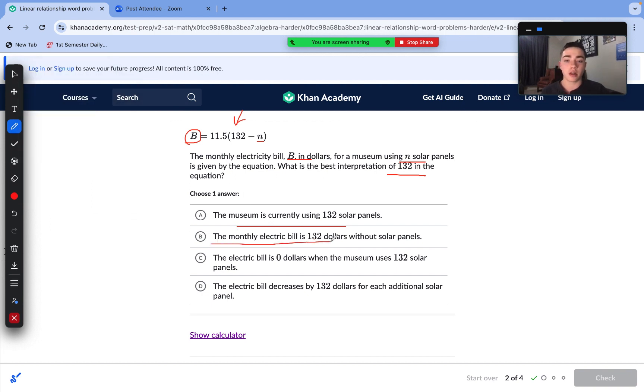Answer is B, the monthly electricity bill is 132 dollars without solar panels. So if we had zero solar panels and n would be equal to zero, then we'd have to do 11.5 times 132. And that is definitely not 132 dollars. That's like a thousand something. So we can eliminate A and B already. A we can understand since it wasn't ever talked about in our question. We need some values in order to understand.